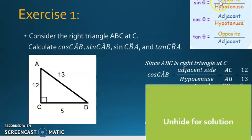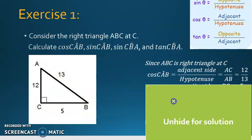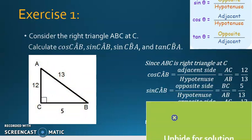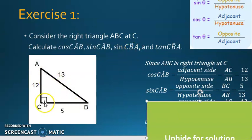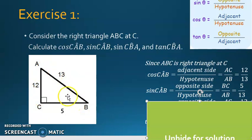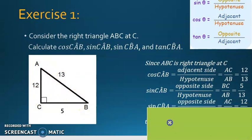Sine of any angle in a right triangle is opposite over hypotenuse. The opposite side of A is CB and the hypotenuse is AB, so sine CAB is 5 over 13. For sine CBA — angle B — opposite over hypotenuse: the opposite side of B is AC over the hypotenuse AB, so sine CBA is 12 over 13.